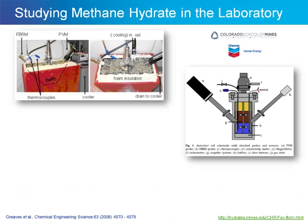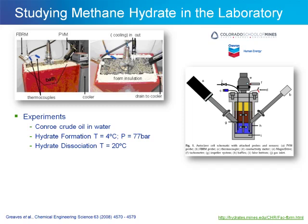In this work, methane hydrate formation and dissociation were studied in the laboratory. This work was published by the Colorado School of Mines in conjunction with Chevron. In these experiments, Conroe crude oil was placed in water. Hydrates were formed under a pressure of 77 bar and 4 degrees Celsius, and subsequently dissociated at a temperature of 20 degrees Celsius.